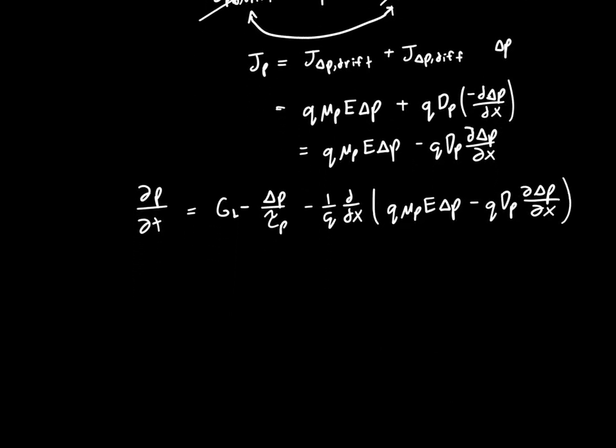The one thing that we're missing is this is still the total hole concentration on the left. So we want to take d/dt of p0 plus delta p. We know that the time derivative of the equilibrium concentration is zero because it's equilibrium. So this is just equal to d delta p dt.